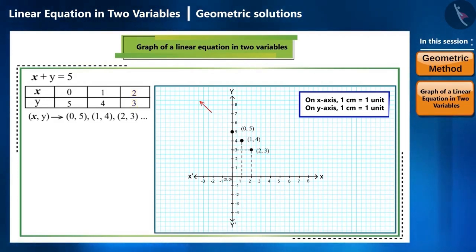Now, we will draw a line connecting these three points. This way, we represent a linear equation with two variables on a graph paper.